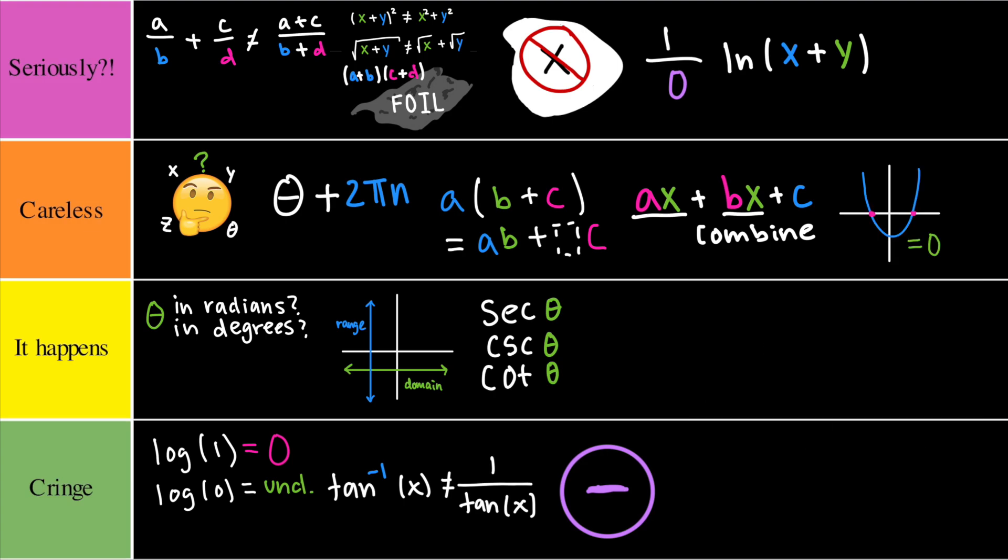Now that wraps up my algebra mistake tier list. Did I miss anything? Let me know in the comments below. Maybe we can do a part 2 for this. Thanks for watching.